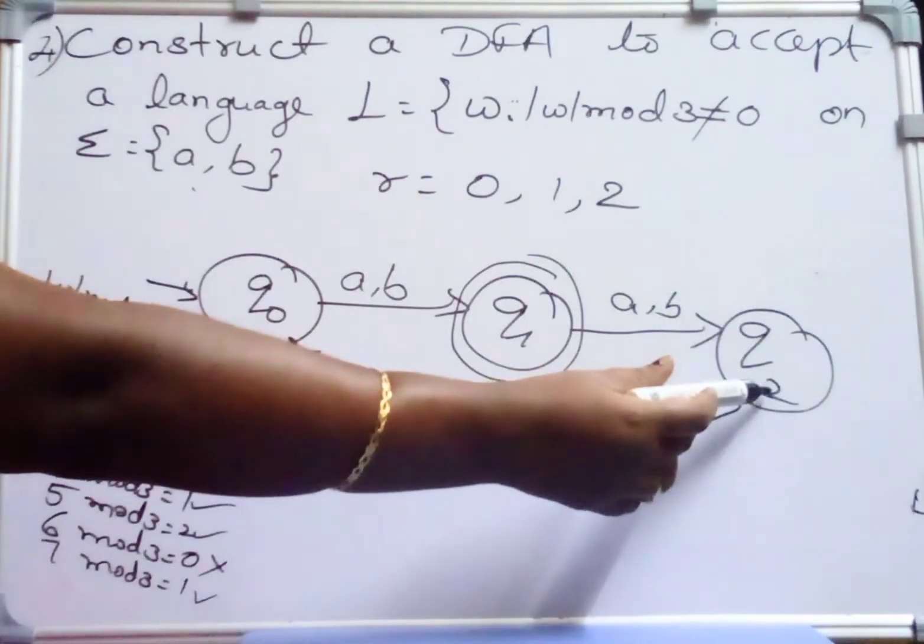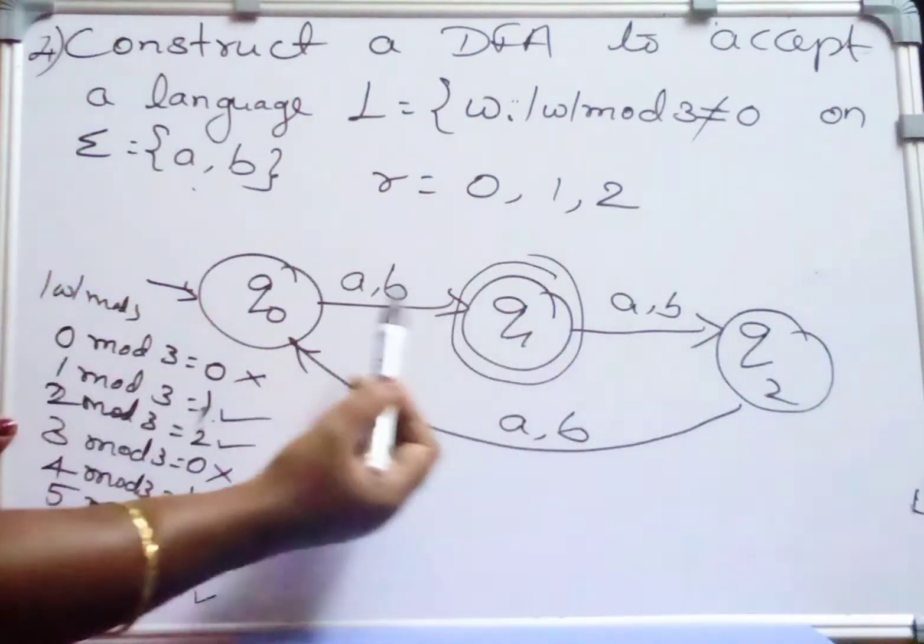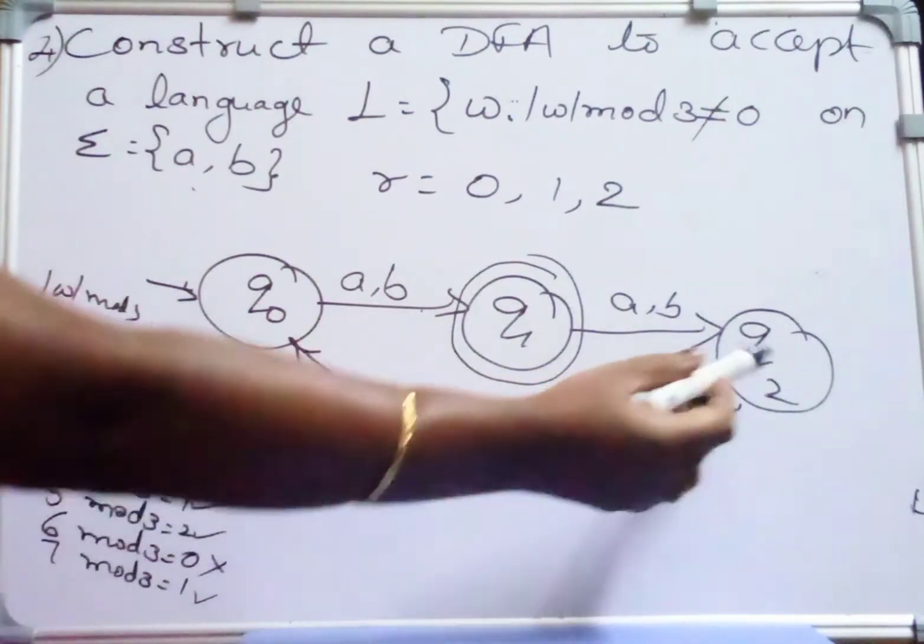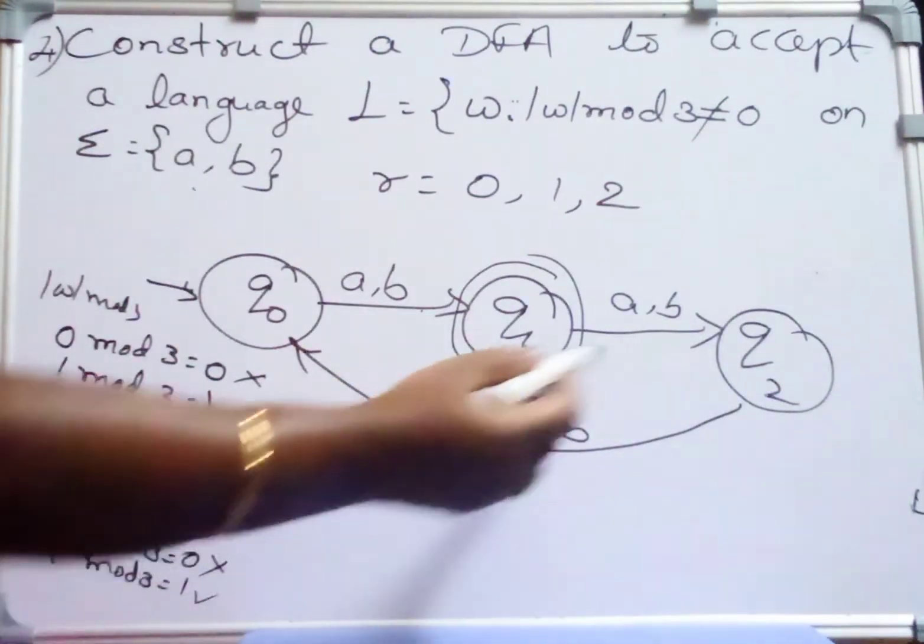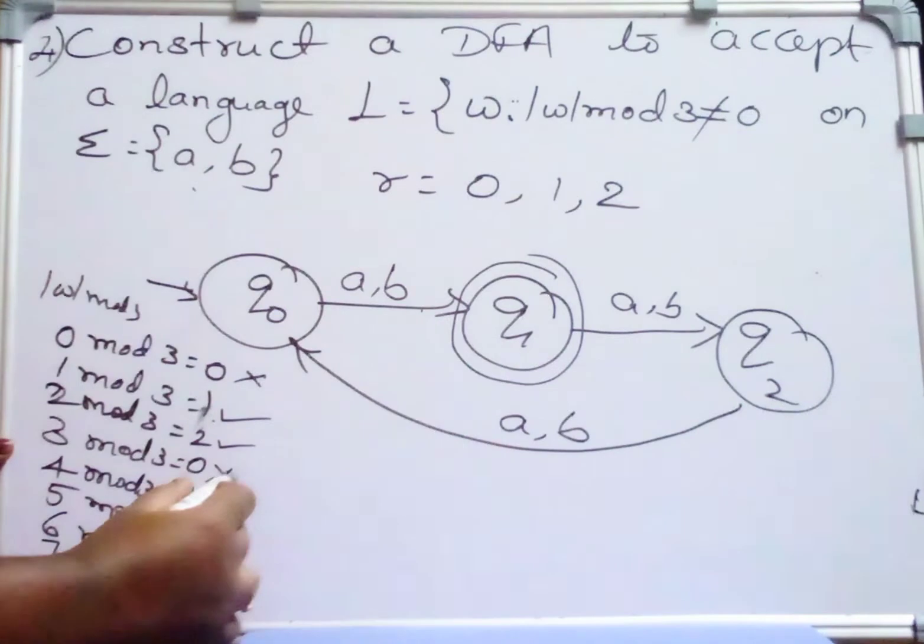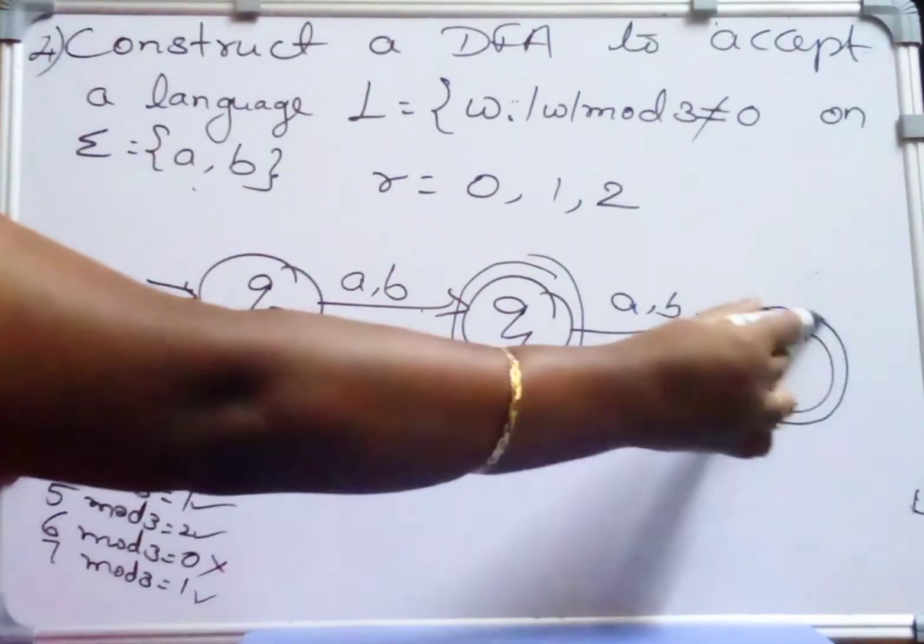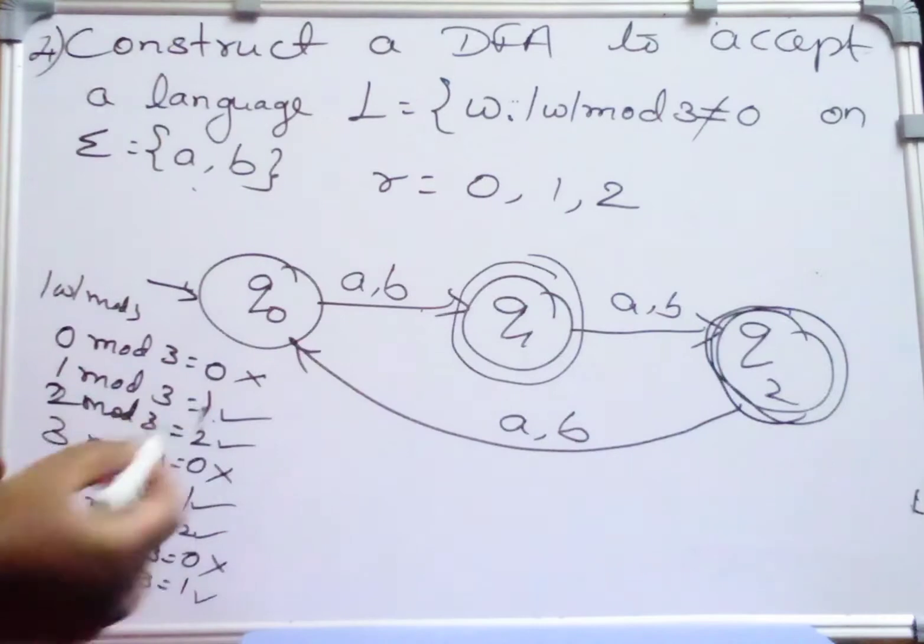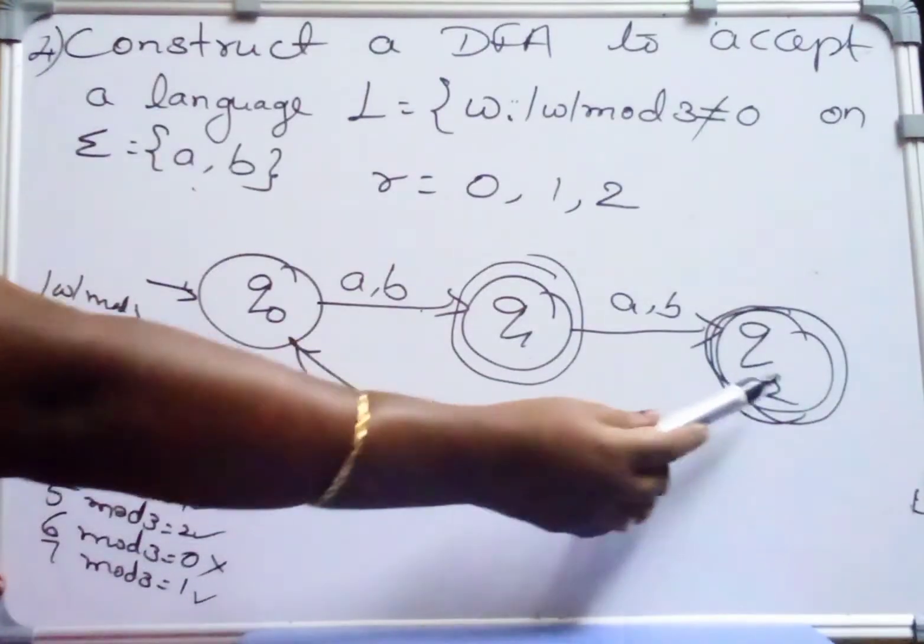And the next, this is the state which will be holding the remainder 2. That is from here A and B, 2 mod 3. 2 mod 3 means the string has to be accepted. So here we will be having 2 different final states, that is Q1 and Q2.